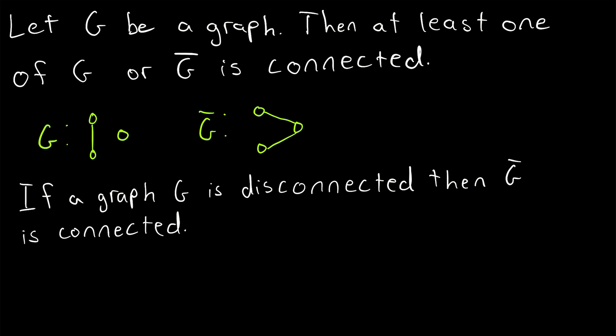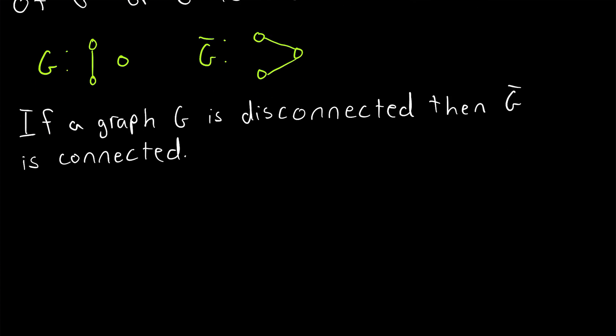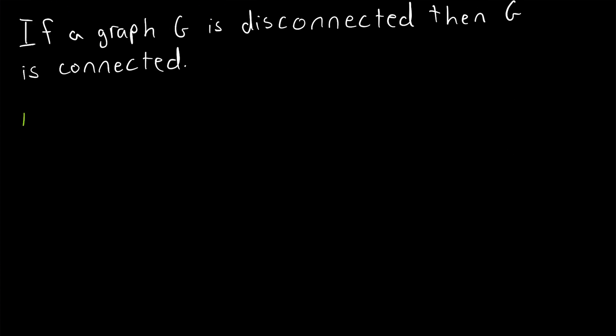Both of these statements tell us that it cannot be the case that both a graph and its complement are disconnected. So let's walk through the proof and see why that is. Of course we'll begin with a disconnected graph G.